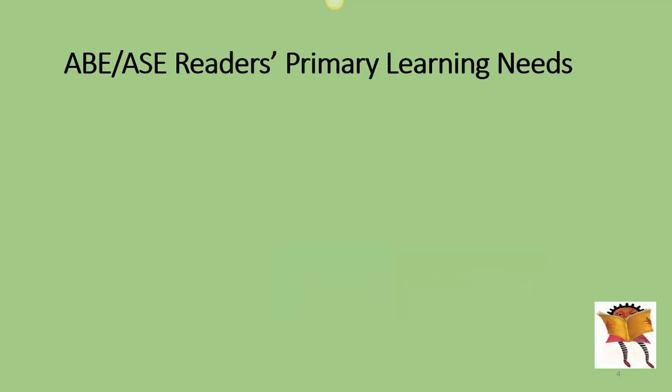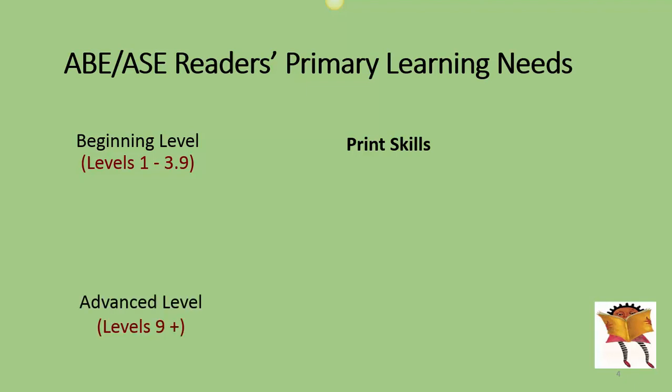Here are some of your ABE/ASE readers' primary learning needs. For the beginning level, grades 1 through 3.9, they have the print skills as we just learned. For the advanced levels, grades 9 through 12, they need meaning skills.